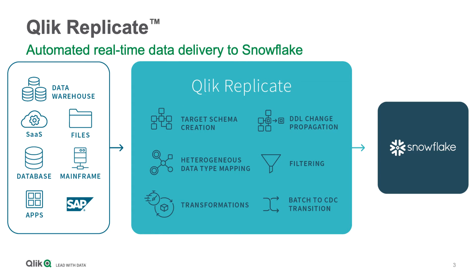Qlik Replicate is a real-time data delivery vehicle for getting data into Snowflake, using change data capture. It does more than just move and synchronize information — it takes those data silos, keeps them synchronized, and puts them into Snowflake in real time. Along the way, it can do transformations, filtering, and automatically create schemas. Qlik Replicate adds significant power to taking source data elements, adding value to them, keeping them synchronized, and pushing that information into Snowflake.